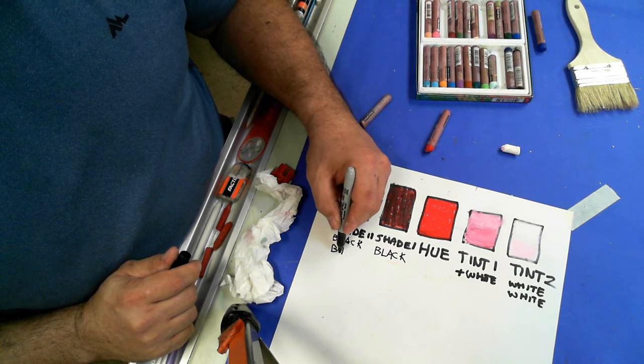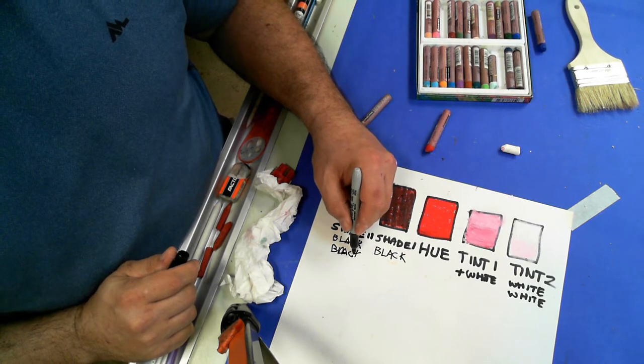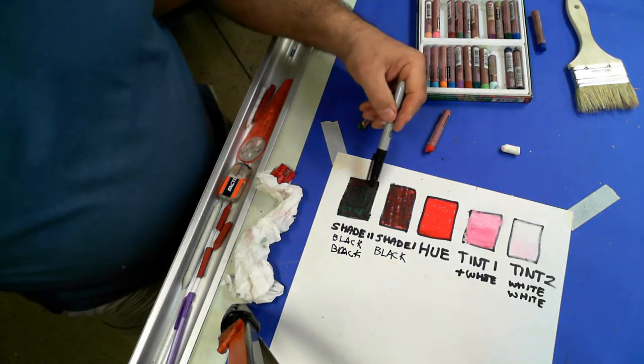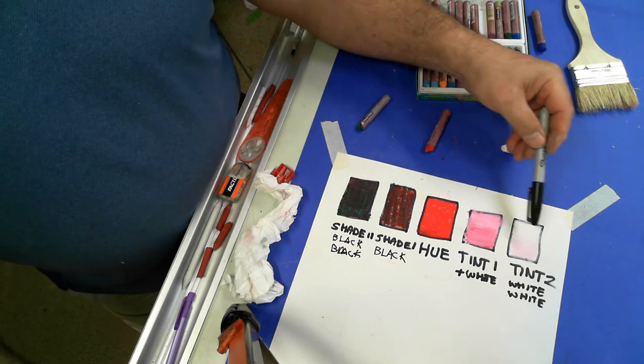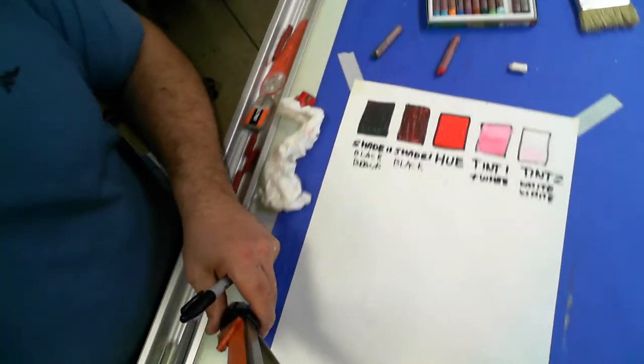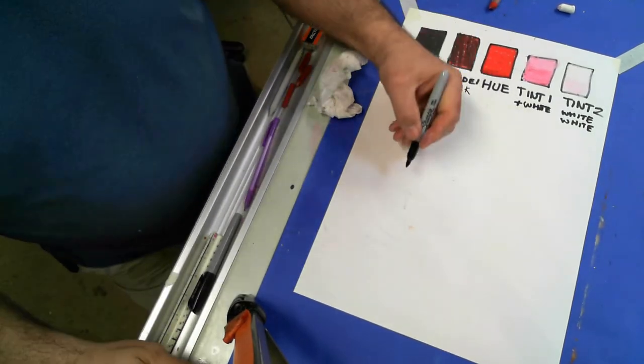And that's how we make our shades, our hue, and our tints. Now we're going to move down here and we're going to make what Mr. Kistler calls a marshmallow mold. I'm going to draw two dots.